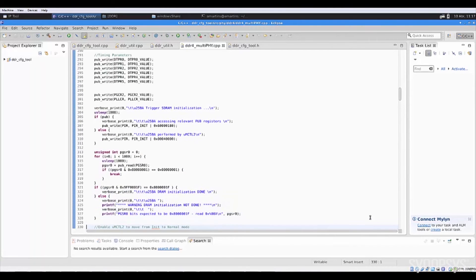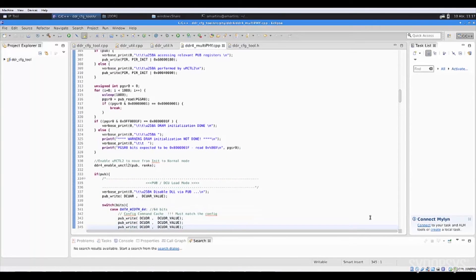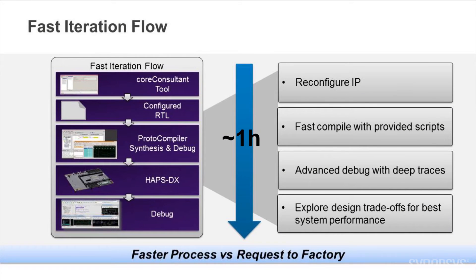The IP prototyping kit allows you to quickly and easily explore many different scenarios. As you can see, this kit works right out of the box. However, developers who would like to modify the IP for their own applications have access to a fast iteration flow of tools. This flow uses the Synopsys Core Consultant tool with a simple GUI interface to change the configuration, generate RTL, and verify the IP integration using the simulation test bench environment, all in about one hour.